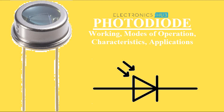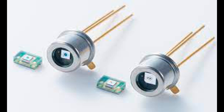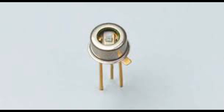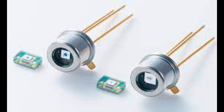In summary, photodiodes operate by converting light into an electrical current through the generation and separation of electron-hole pairs in a semiconductor material. They can operate in different modes to suit various applications, from simple light detection to high-speed optical communication and low-light level detection. Photodiodes have a wide range of applications due to their ability to accurately and efficiently convert light into electrical signals.